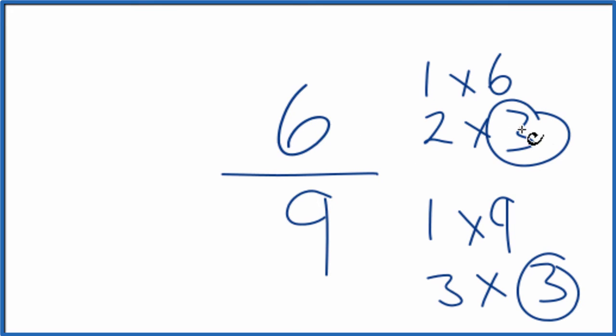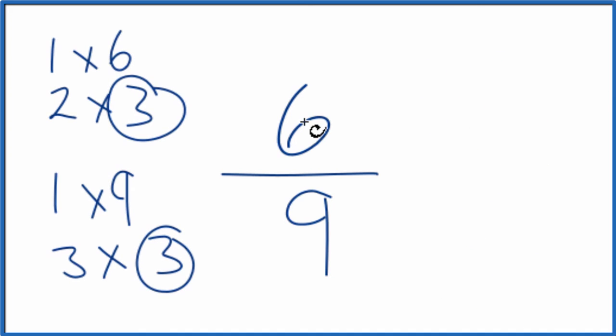So we'll divide 6 by 3, 9 by 3, and we'll have simplified 6 over 9. Let's move these over here. So 6 divided by 3, that gives us 2. And 9 divided by 3, that gives us 3.